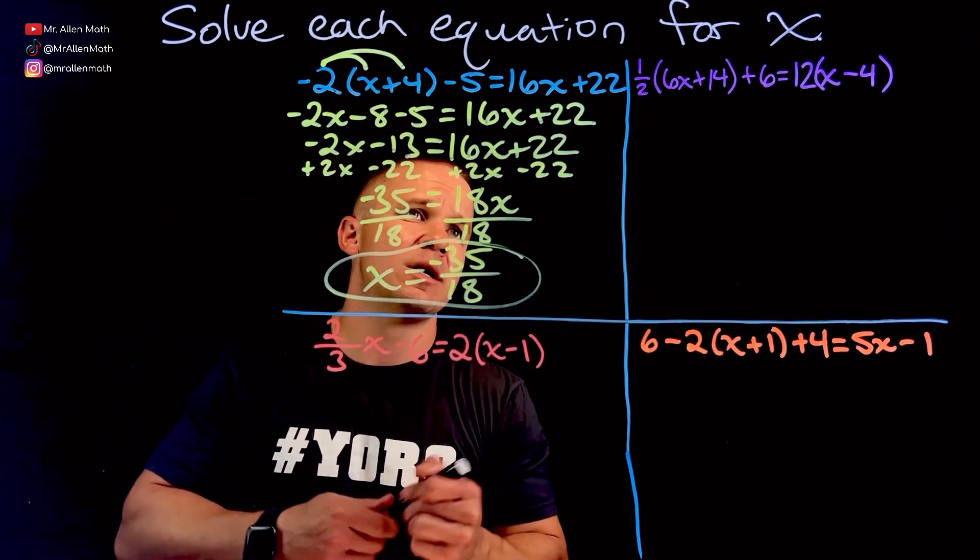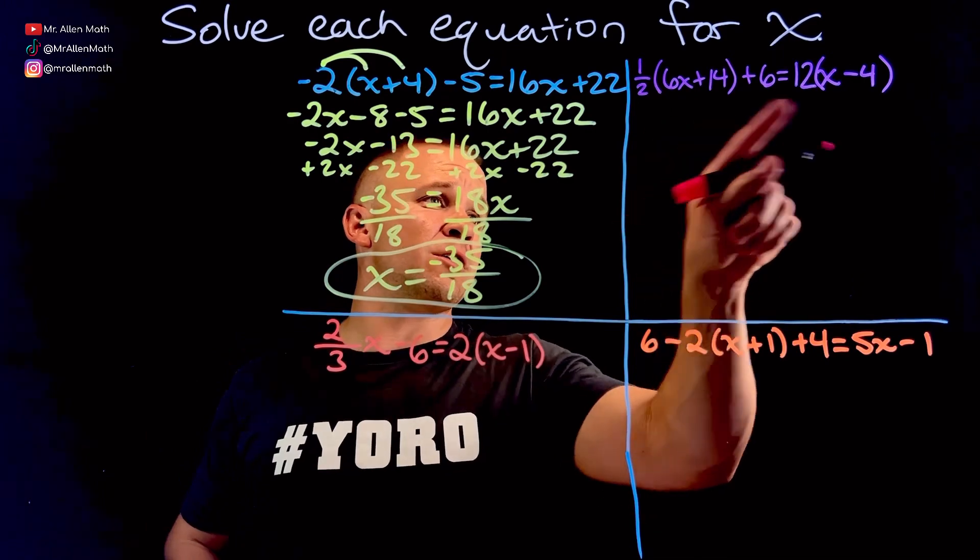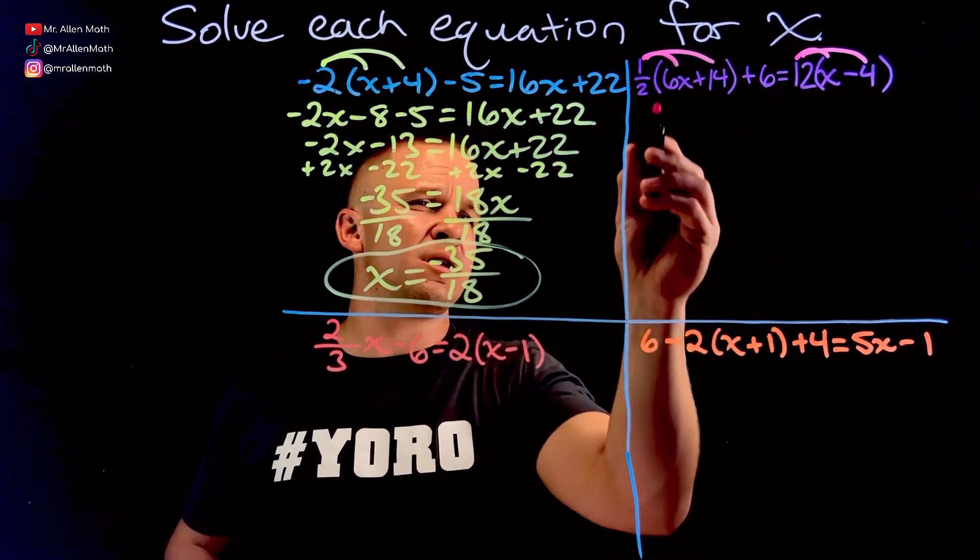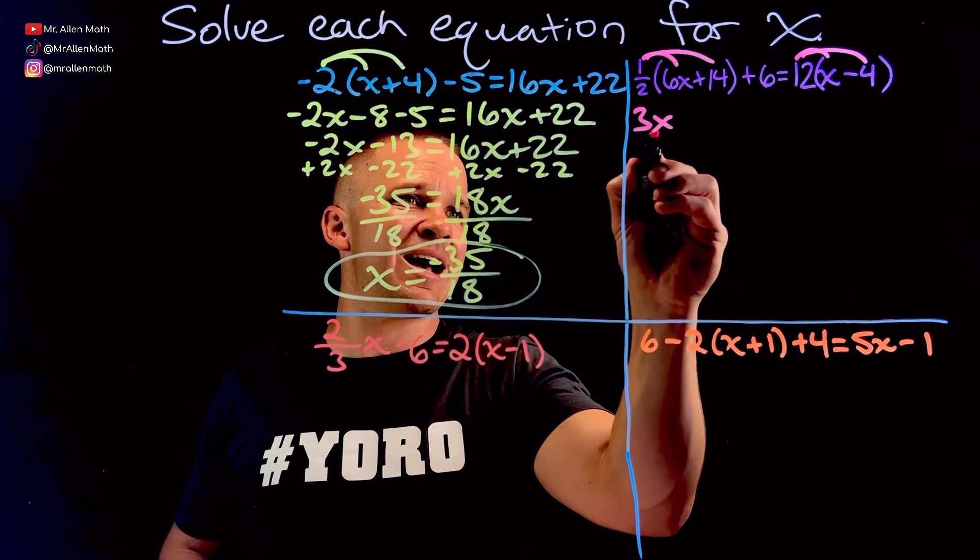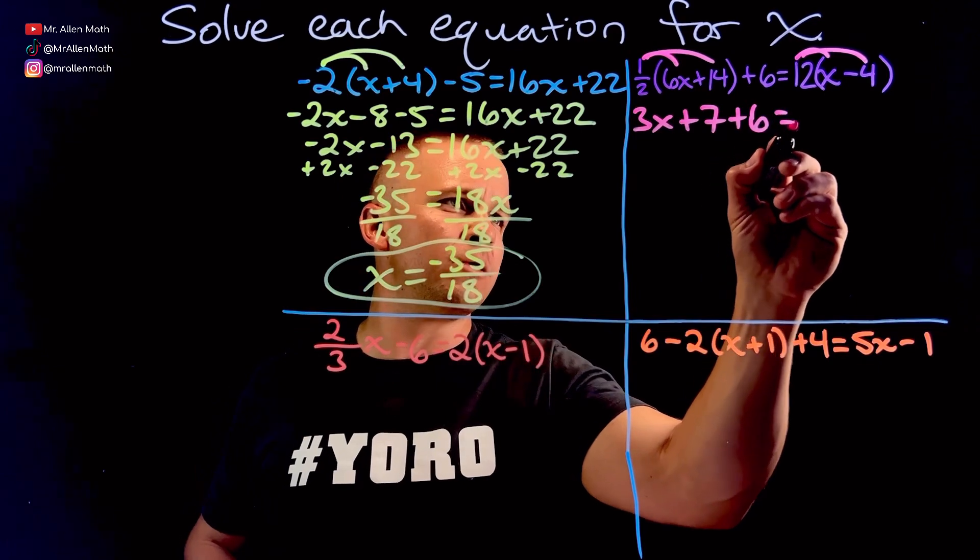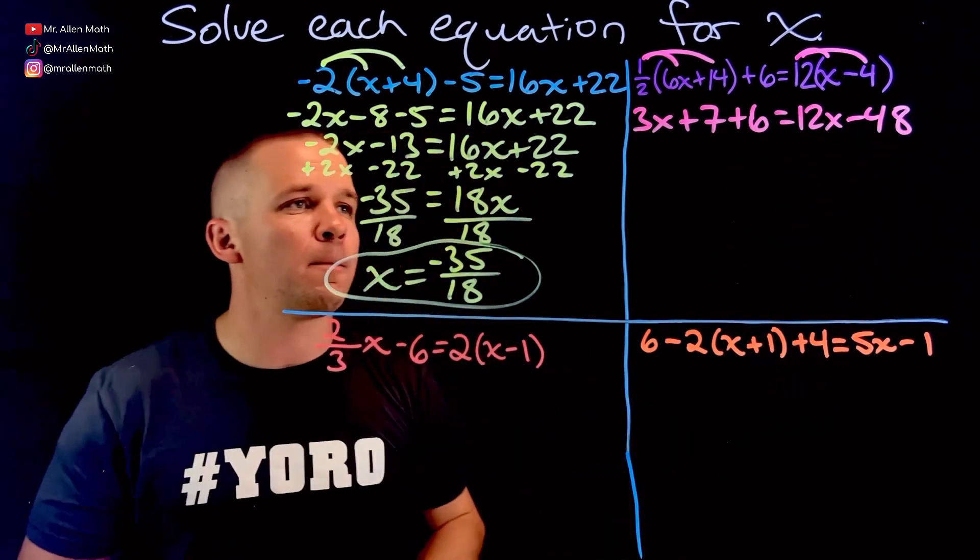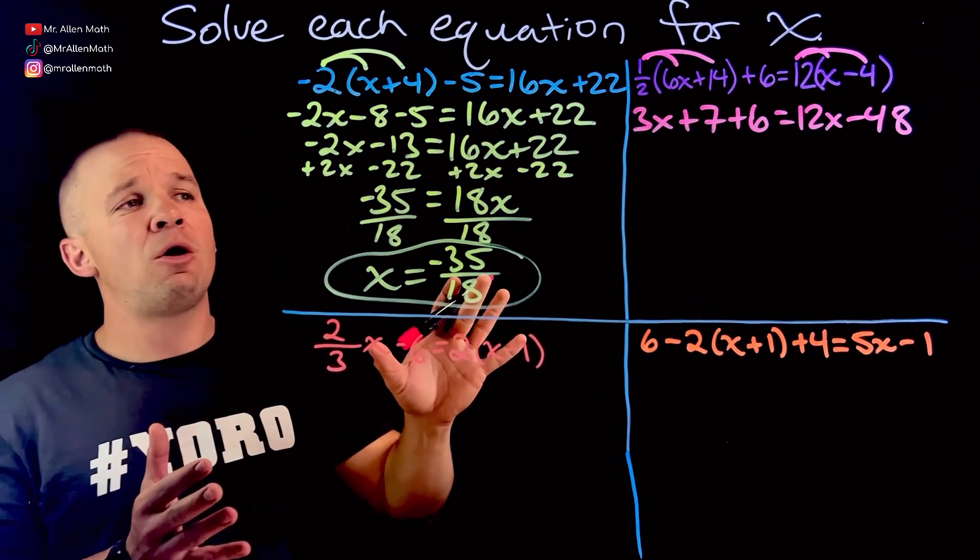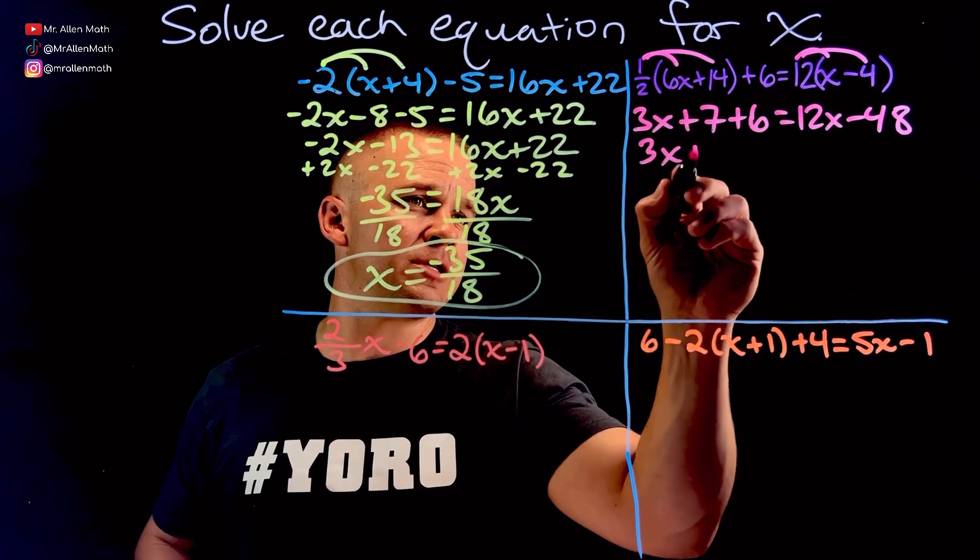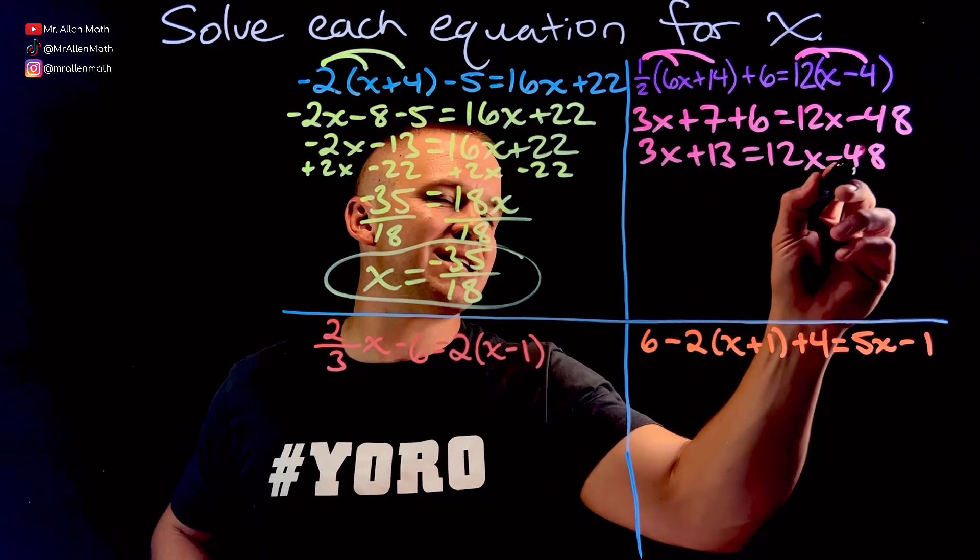Let's go with pink here for this one. So I've got, again, I've got to distribute. We've got to distribute in a couple spots. So the 1 half is going to get distributed. The 12 gets distributed. 1 half times 6 is 3x. Half of 14 is 7 plus 6 equals, then we get 12x minus 48. Distribution's done. Now we've got to combine some like terms. So I'm going to get 3x, and then we've got 13 equals nothing over here. So we're going to leave this guy the same on the right-hand side.